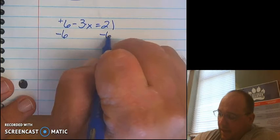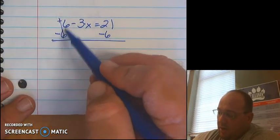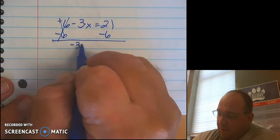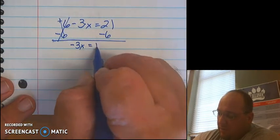I'm going to do that to both sides. This causes this to cancel out. Leaves me with just a negative 3x now equals 21 minus 6, which is 15.